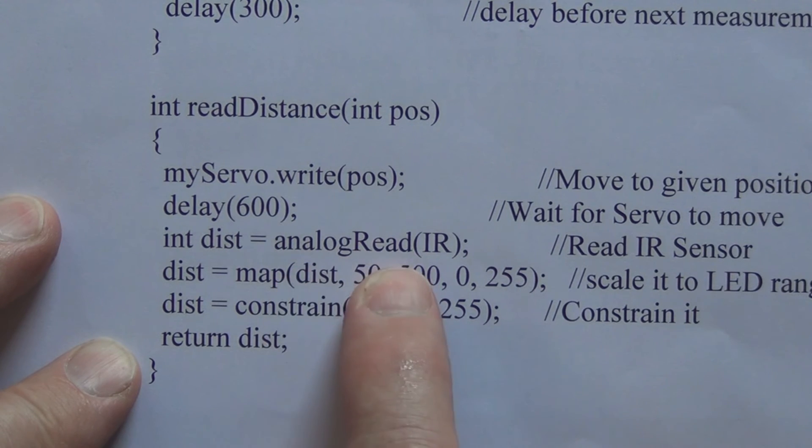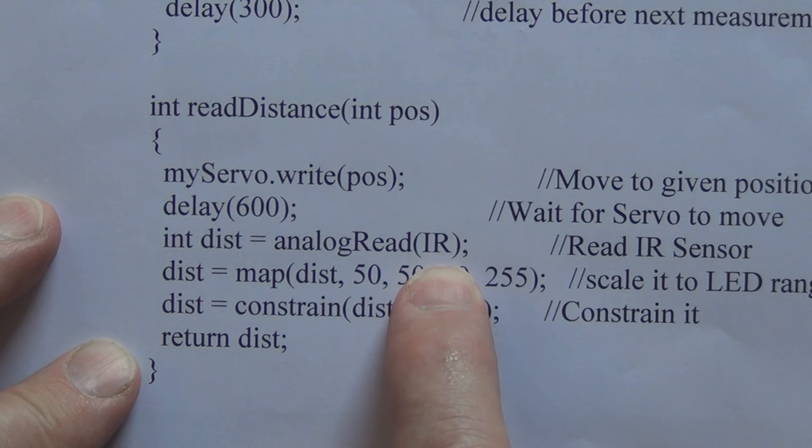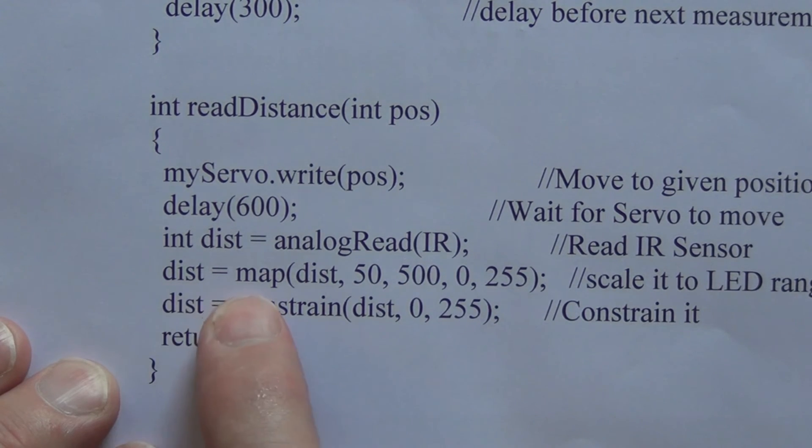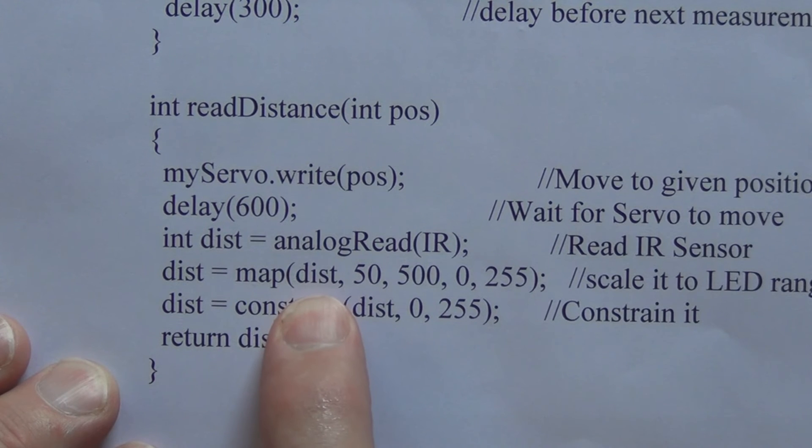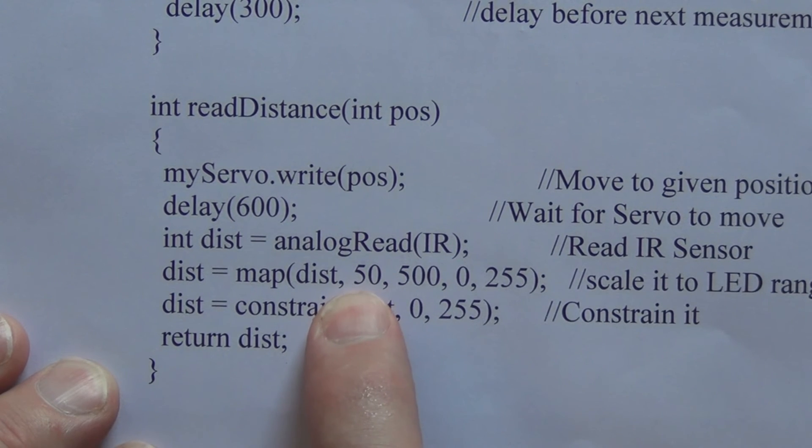And here we have the analogRead IR, so this is reading the analog output from the infrared sensor at A0. And here we are mapping that information, like we did in the last video for the IR sensor alone. We are taking that information from the variable DIST and we are changing the range from 50 to 500 to 0 to 255.